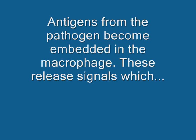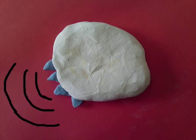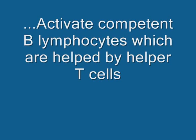Antigens from the pathogen become embedded in the membrane of the macrophage. These release signals which activate competent B lymphocytes, which are helped by helper T cells.